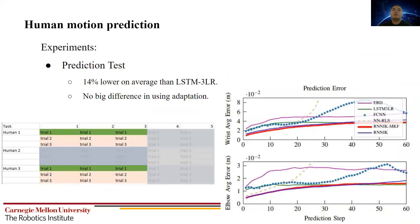The first test is to test accuracy for usual prediction. From the right figure, we can see our method in red achieved the lowest prediction error. We also notice that there's no big difference in using adaptation here, which was expected, because the model has seen the same human doing the same tests before.